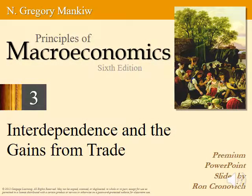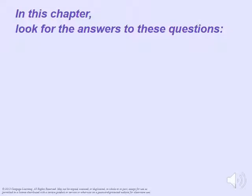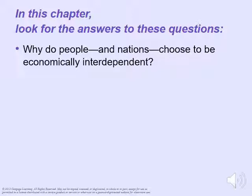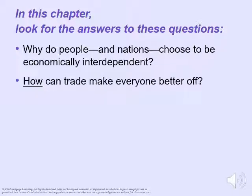Welcome back to Principles of Macroeconomics. This is Professor Bradbury. Today we will be discussing Chapter 3: Interdependence and the Gains from Trade. In this chapter we'll look to answer the following questions: Why do people and nations choose to be economically interdependent? How can trade make everyone better off? What is absolute advantage? What is comparative advantage? How are these concepts both similar and also different?